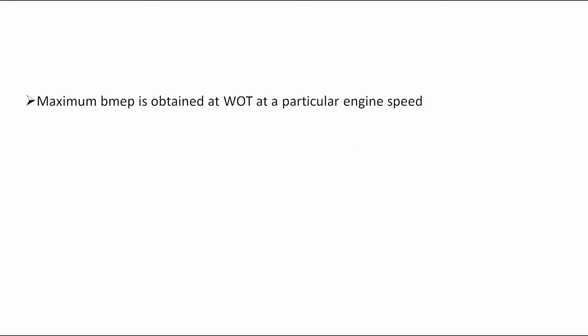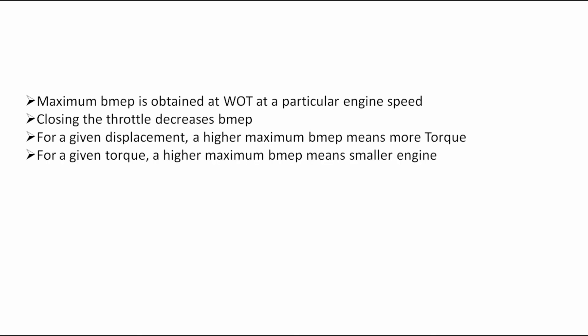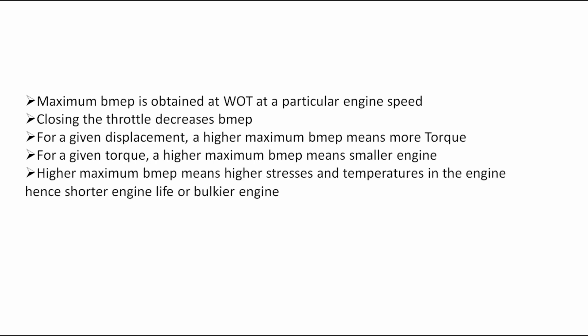Maximum brake mean effective pressure is obtained at wide open throttle at a particular engine speed. Closing the throttle decreases BMEP. For a given displacement, a higher brake mean effective pressure means more torque. For a given torque, a higher maximum brake mean effective pressure means smaller engine. Higher maximum BMEP means higher stresses and temperatures in the engine, hence shorter engine life or bulkier engine.